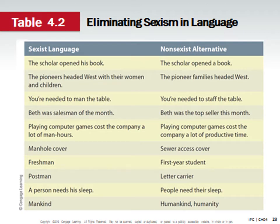Looking at some examples: 'A person needs his sleep' becomes 'People need their sleep.' 'Postman' becomes 'letter carrier.' 'Freshman' becomes 'first year student.' When you see a police officer who is a woman, calling them a 'policeman' is not accurate — it's a policewoman. The reality is that we have to use language specifically, and when we assume that using the masculine doesn't presume the person is a man, we're not being accurate.